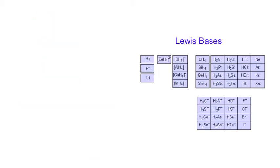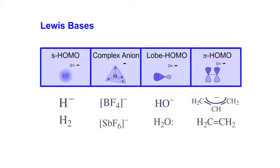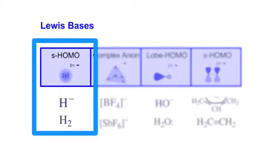First, Lewis bases. We can classify the Lewis bases by type. It transpires that there are four general types of Lewis base, classified by frontier molecular orbital topology. First we have the S Homo Lewis bases. These are Lewis bases which have a spherical highest occupied molecular orbital, typified by the hydride ion and hydrogen H2.